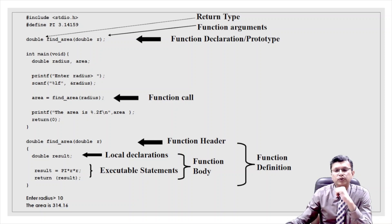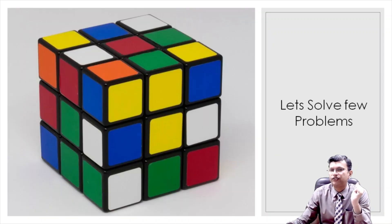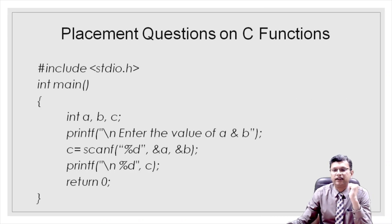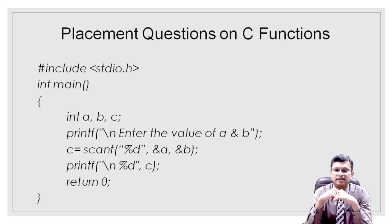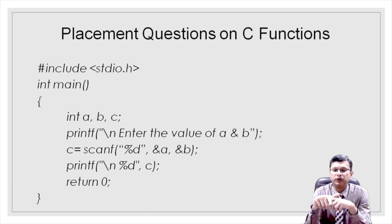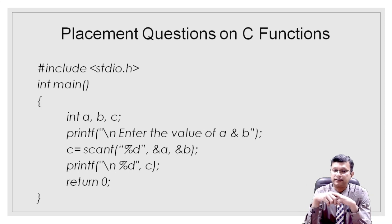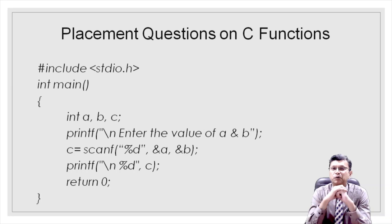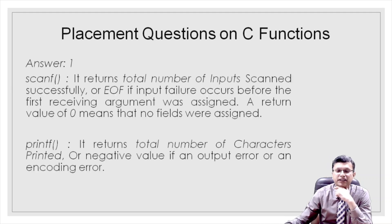Let's look at placement question one. In the main function, there are variables a, b, and c. The user is asked to enter values for a and b, with addresses of a and b passed to scanf. However, there is only one format specifier `%d`, so only one value is scanned and assigned to c. What will be the output of this program? The answer is one.